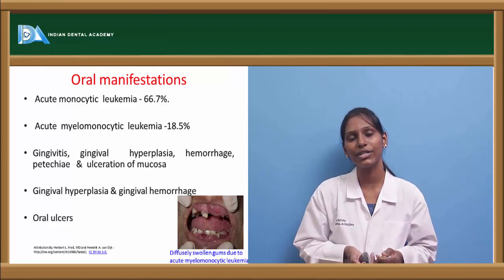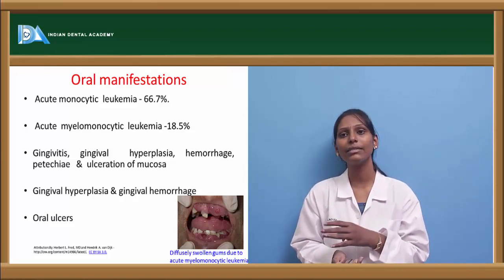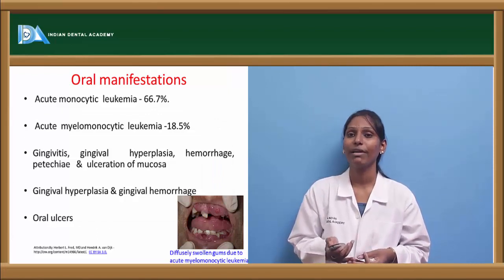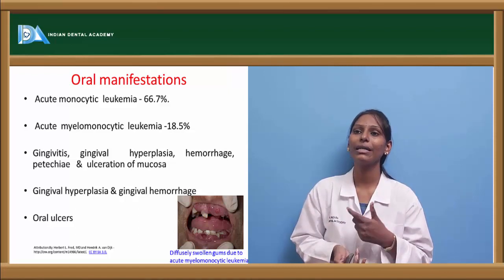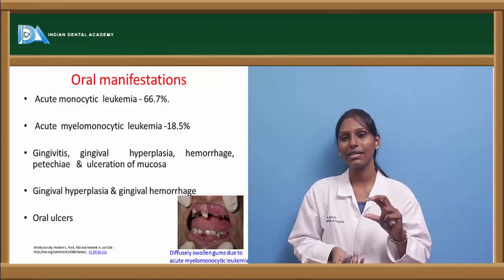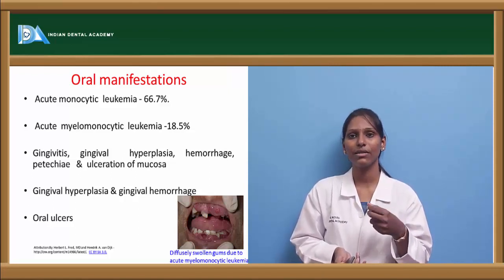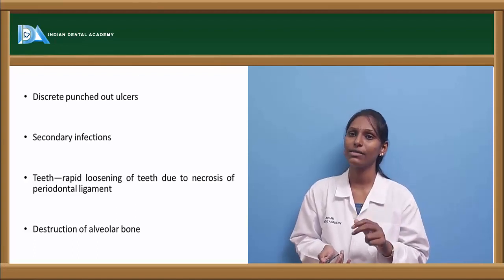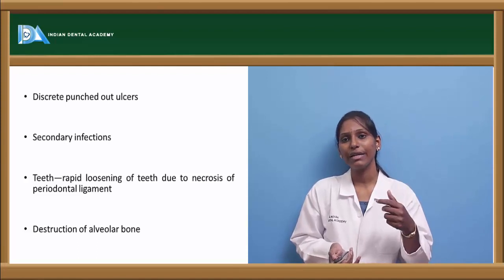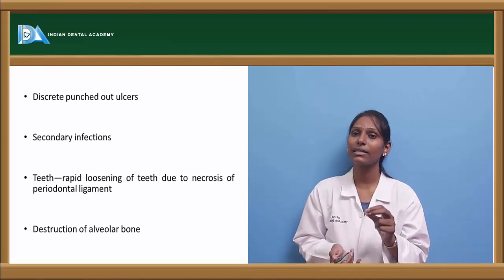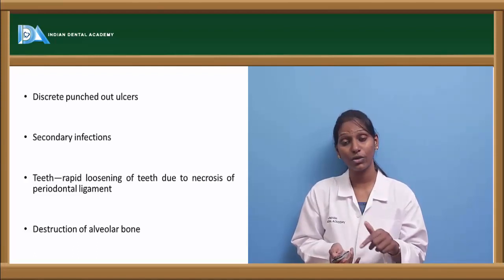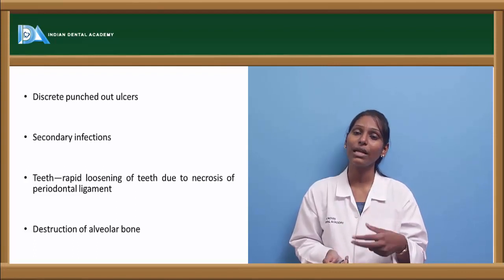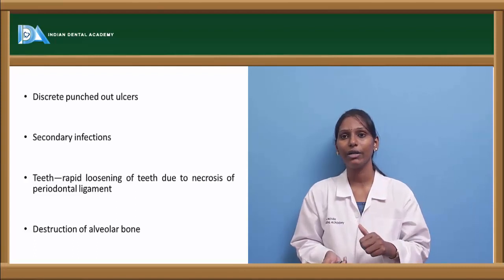Regarding oral manifestations, ALL in children presents with more oral manifestations, though other types of leukemia also present with them. Gingival hyperplasia and gingival hemorrhage are usually seen, along with gingivitis and ulceration of mucosa. Gingival hyperplasia in leukemia is boggy, erythematous or reddish in color, and easily friable, bleeding on simple provocation or probing. Oral ulcerations appear as discrete, punched-out ulcers, and are prone to secondary infections. A characteristic feature is bleeding from the gingival sulcus. Periodontal ligament necrosis is seen, progressing to underlying tissues, causing rapid loosening of teeth and destruction of the underlying alveolar bone.